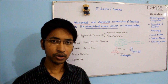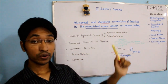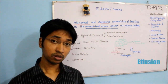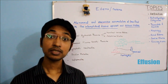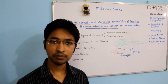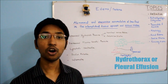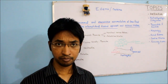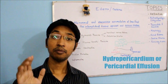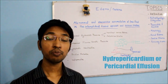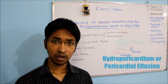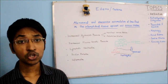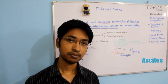Whenever edema is occurring in serous cavities or body cavities, that is also called effusion. For example, whenever there is abnormal and excessive accumulation of fluid in the pleural cavity, that is known as pleural effusion or hydrothorax. Similarly, whenever there is edema in the pericardial cavity, that is known as pericardial effusion or hydropericardium. And whenever there is abnormal and excessive accumulation of fluid in the peritoneal cavity, that is known as ascites.